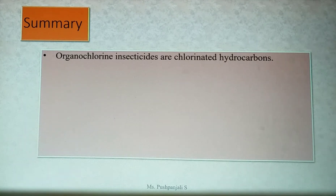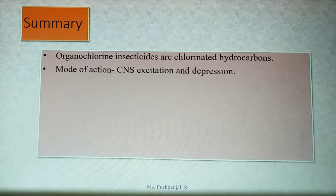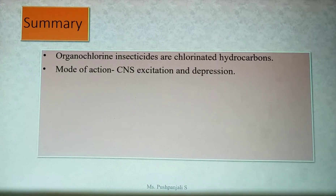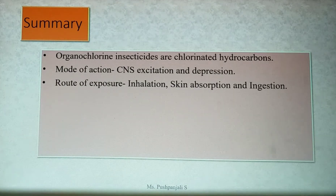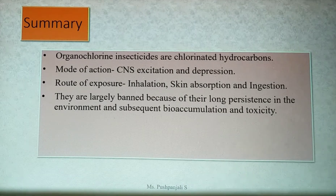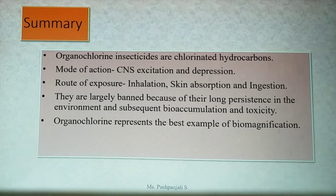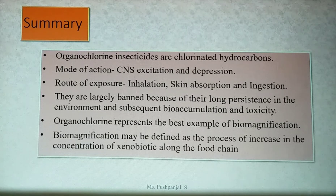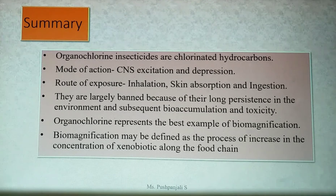Summary: Organochlorine insecticides are chlorinated hydrocarbons. They are largely banned because of their long persistence in the environment and subsequent bioaccumulation and toxicity. Organochlorine represents the best example of biomagnification, which may be defined as the process of increase in the concentration of a xenobiotic along the food chain.